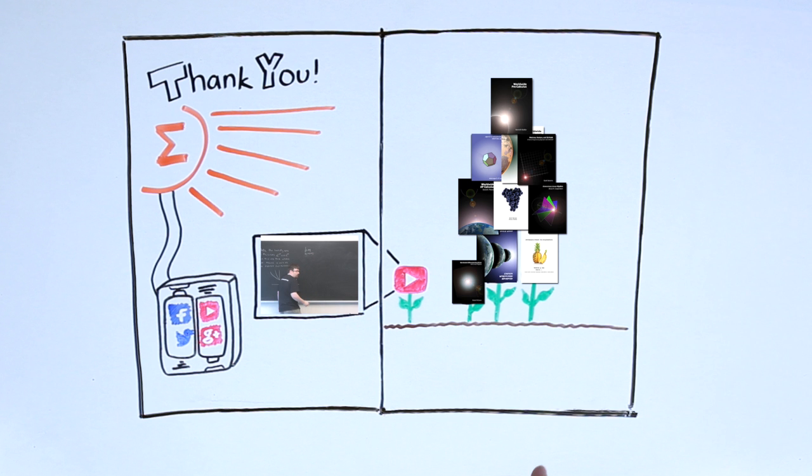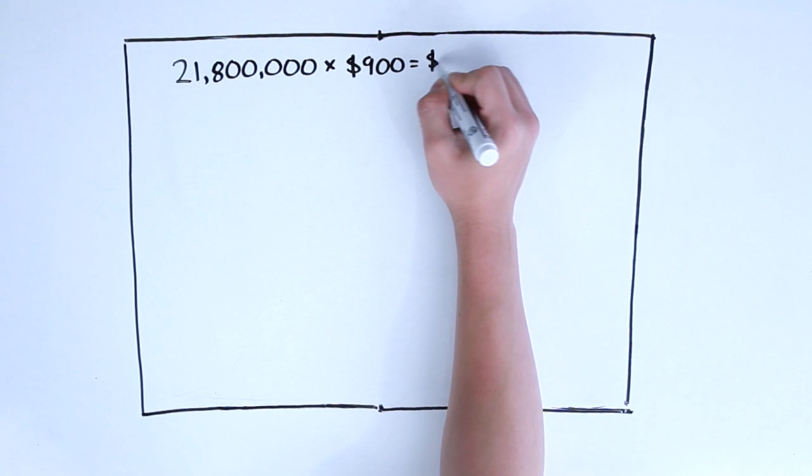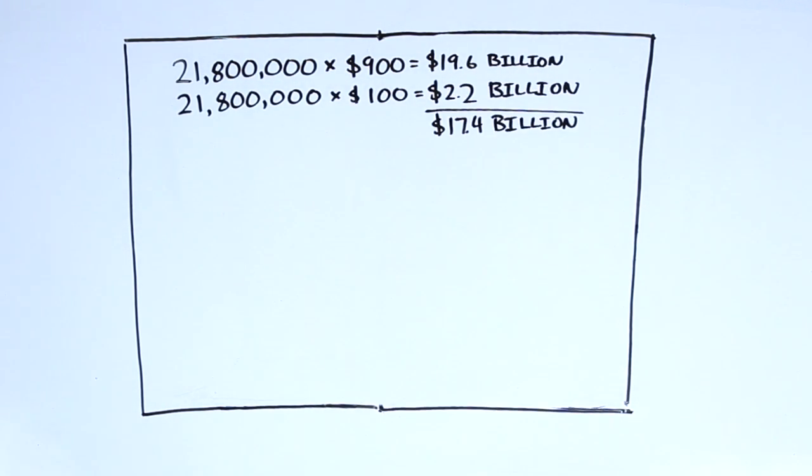What is the potential impact of our textbooks? There are 21.8 million college students in the United States spending an average of $900 per year on textbooks. That's $19.6 billion.